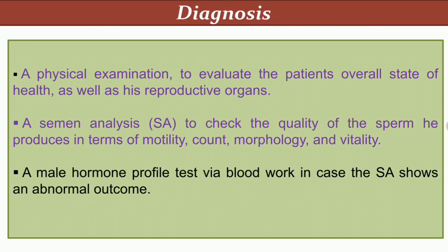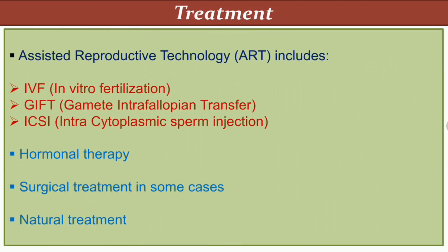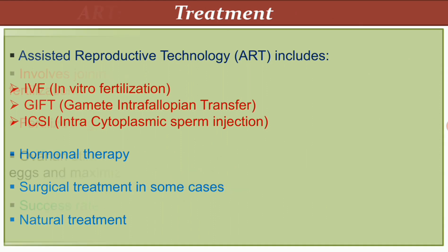Treatment options include Assisted Reproductive Technology (ART), which includes IVF (in vitro fertilization), GIFT (gamete intrafallopian transfer), and ICSI (intracytoplasmic sperm injection). ART is a primary treatment for infertility. Other treatments include hormonal therapy, surgical treatment in some cases, and natural treatments.